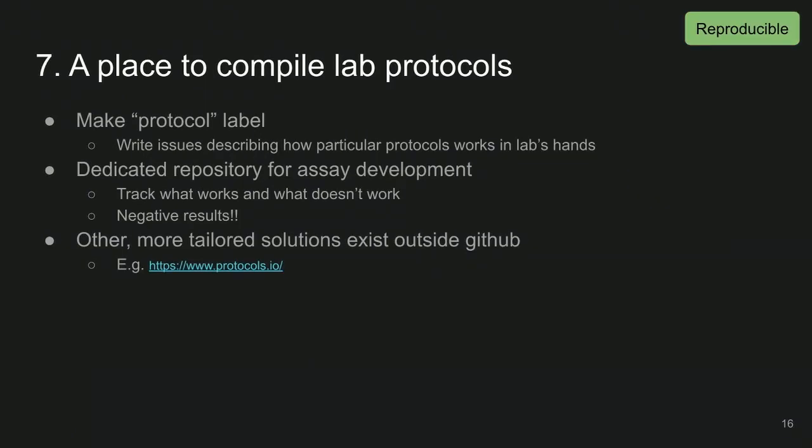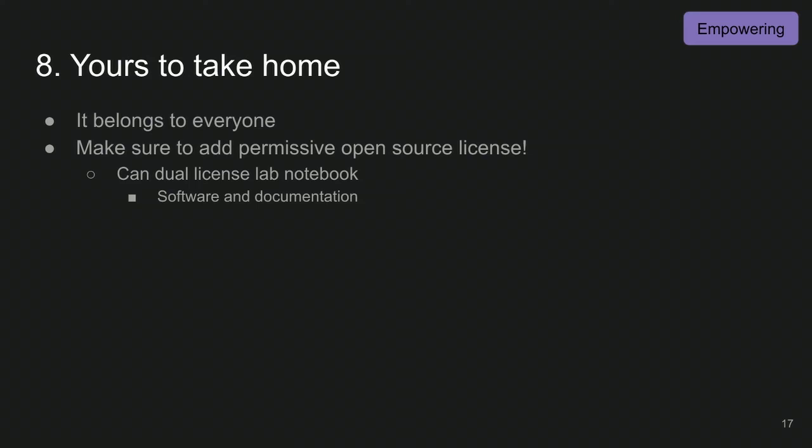GitHub is a really nice place to compile lab protocols, although there are more tailored solutions like protocols.io. You can create a dedicated repository for a specific assay development and track what works and what doesn't — including negative results. The most important point is that in an open science context, the lab notebook is certainly yours to take home — not only does it belong to you, but it also belongs to everyone in the open as long as they can find it. You need to add a permissive open source license so that people can reuse it easily.